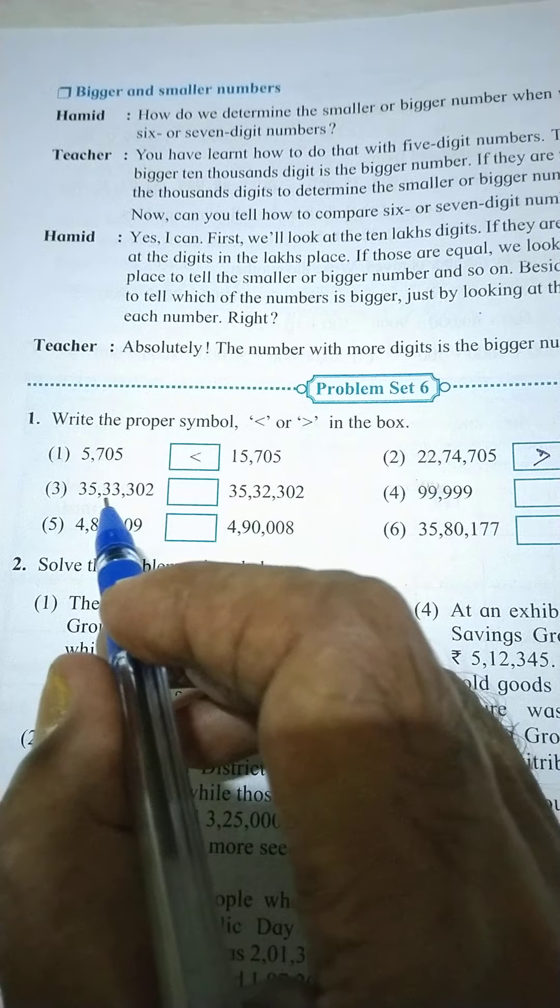Second: 22 lakhs 74,705 is... Here in third question, done.